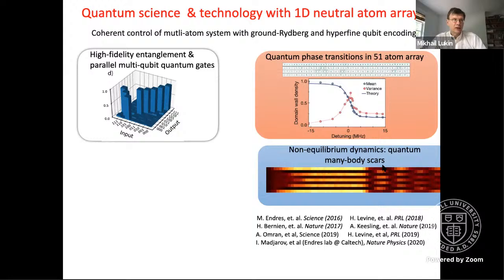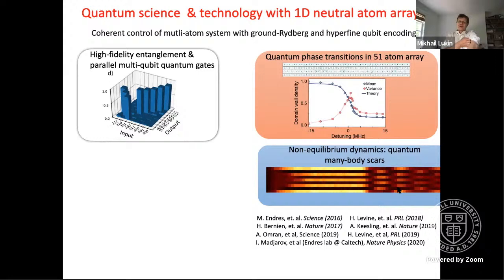This is the quantum scars phenomenon. This is not an integrable system, and it turns out that only very special states undergo this dynamics. This kind of example illustrates the power of this approach — we can go to corners of Hilbert space that no one has ever explored.